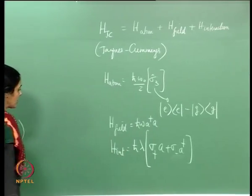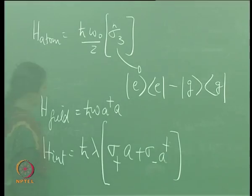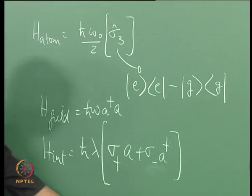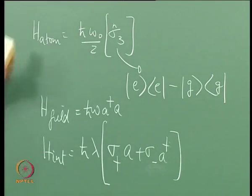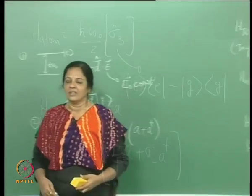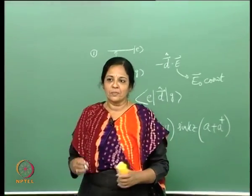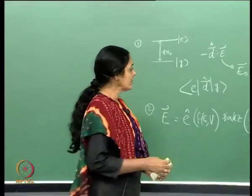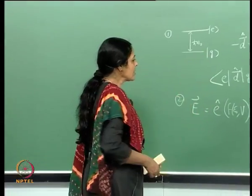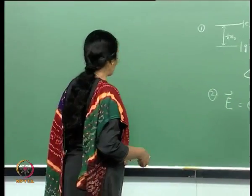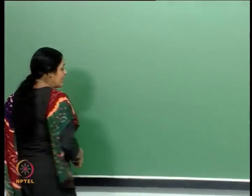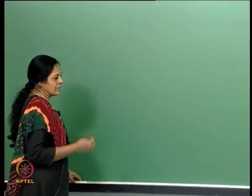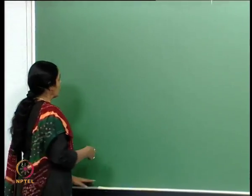The term σ₊a takes the ground state of the atom to the excited state while absorbing a photon (destroying a photon), whereas σ₋a† takes the excited state to the ground state while emitting a photon (creating a photon). This is the Jaynes-Cummings Hamiltonian with these 3 parts, and I will now proceed to discuss the Jaynes-Cummings model and the dynamics that comes out of it.